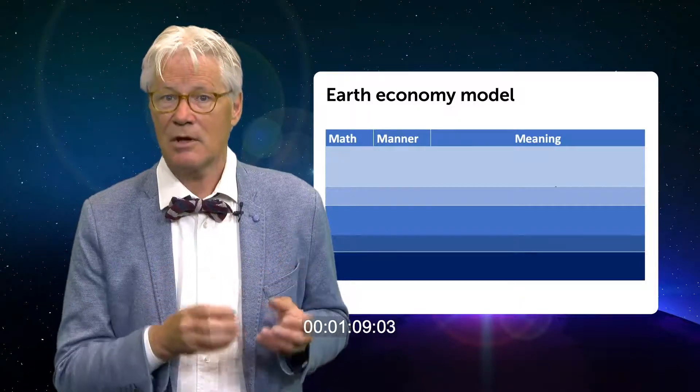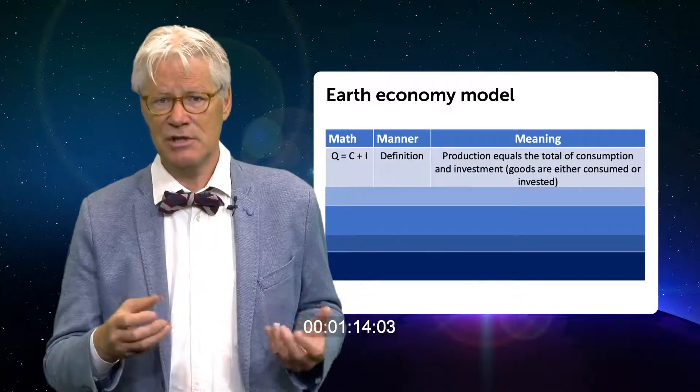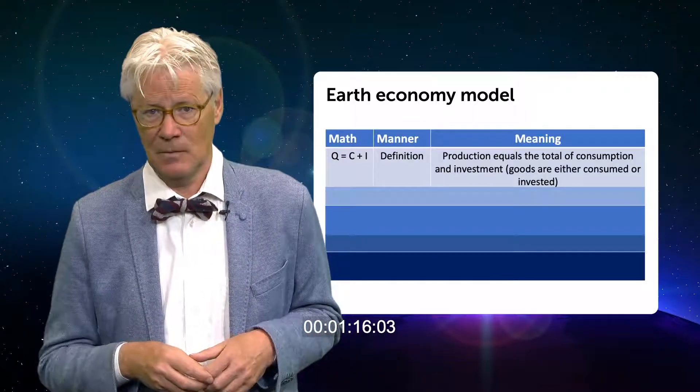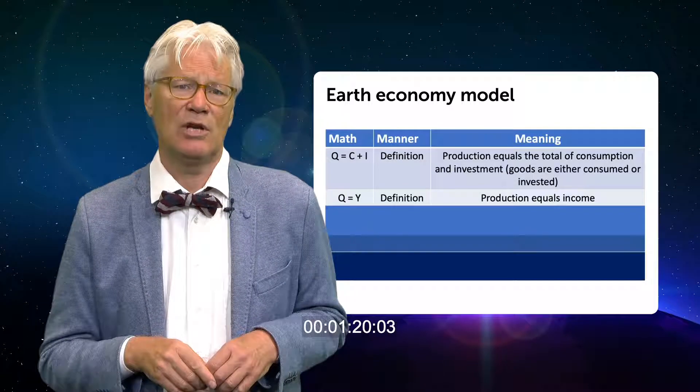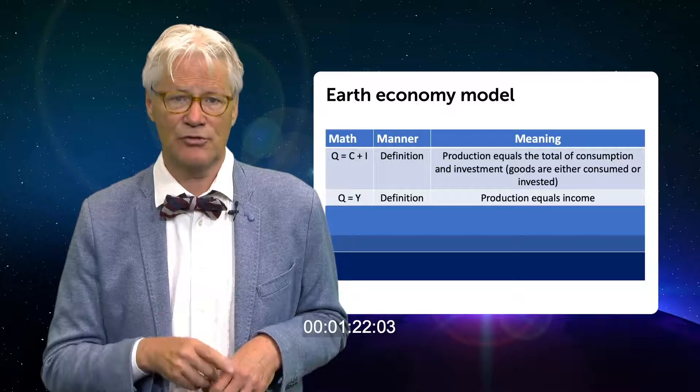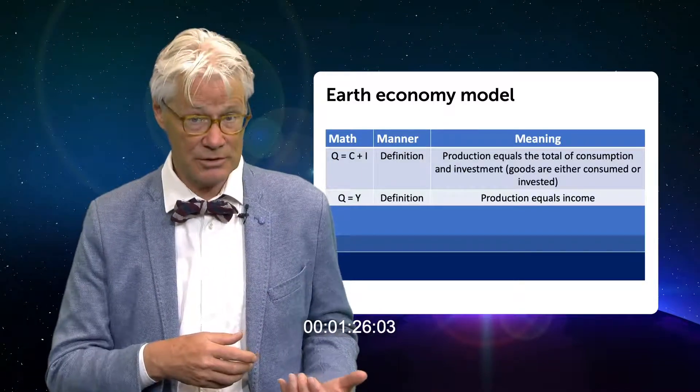We start with the definition equation that describes that production Q consists of consumption C and investment I. The next equation uses the definition that production equals income. Production generates income. Income generates production.